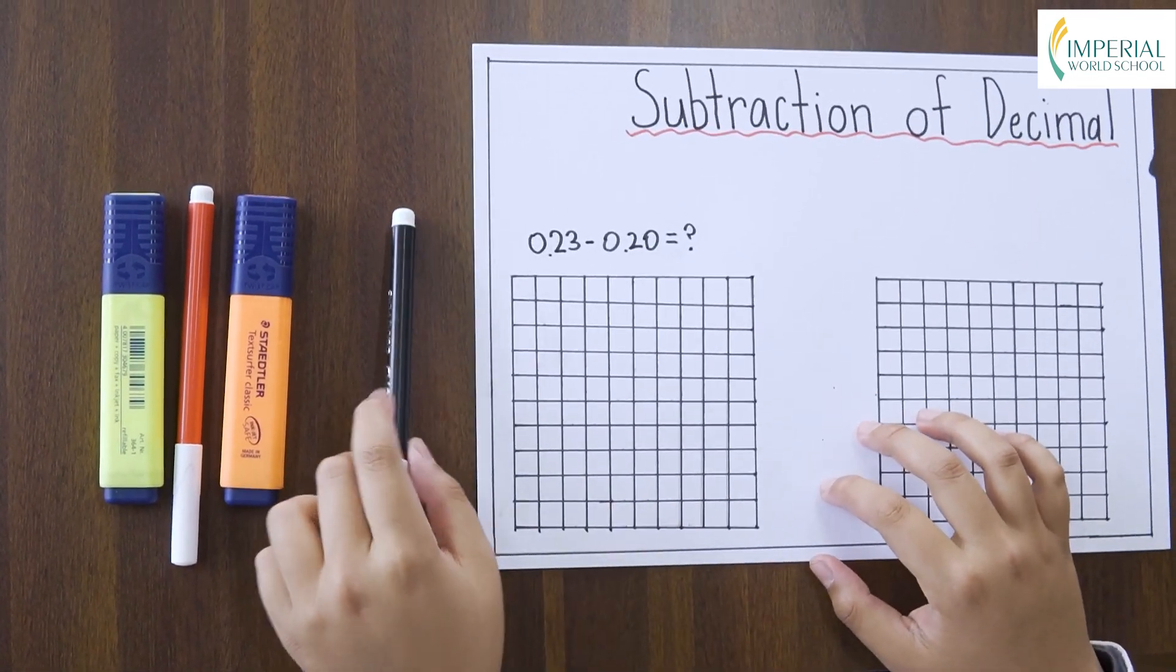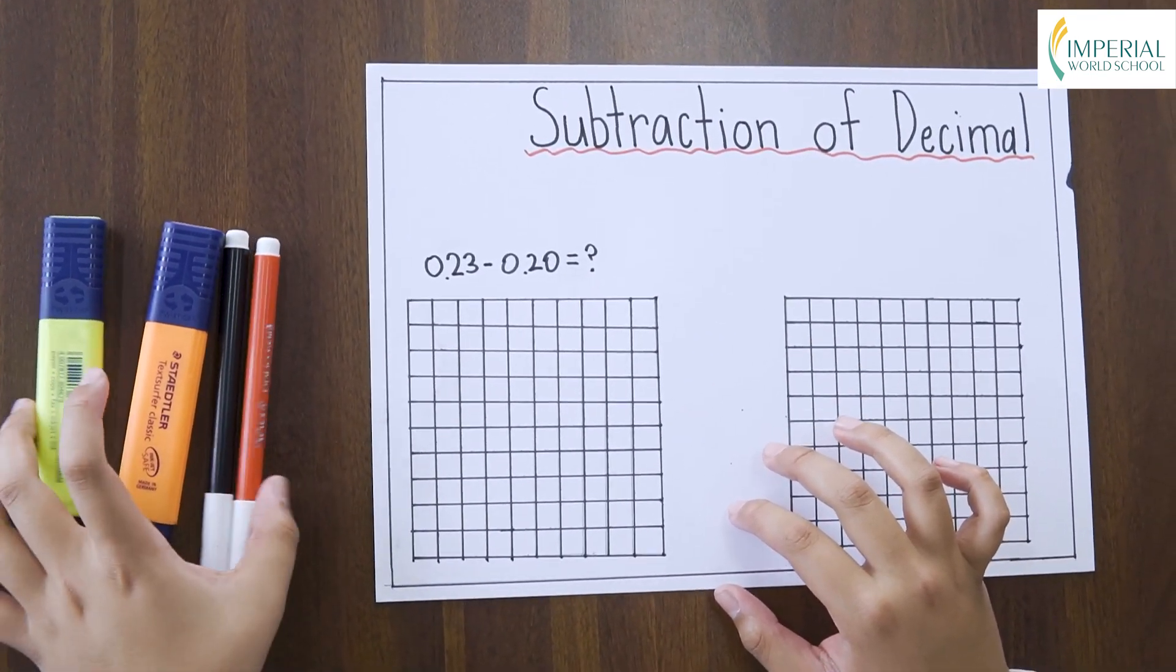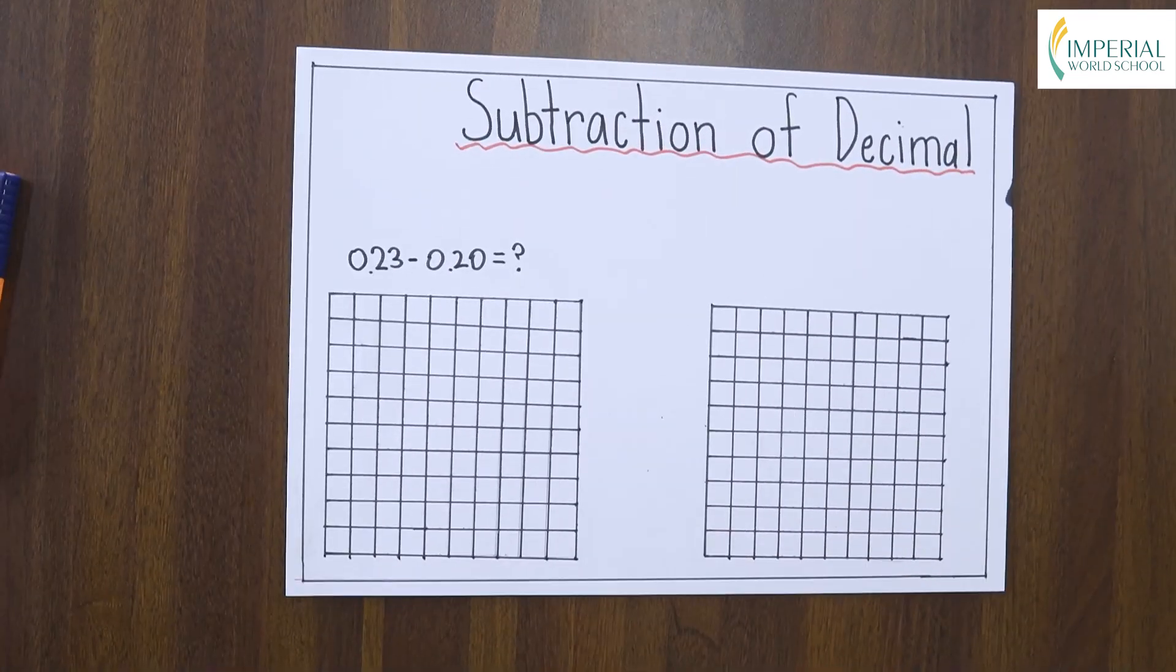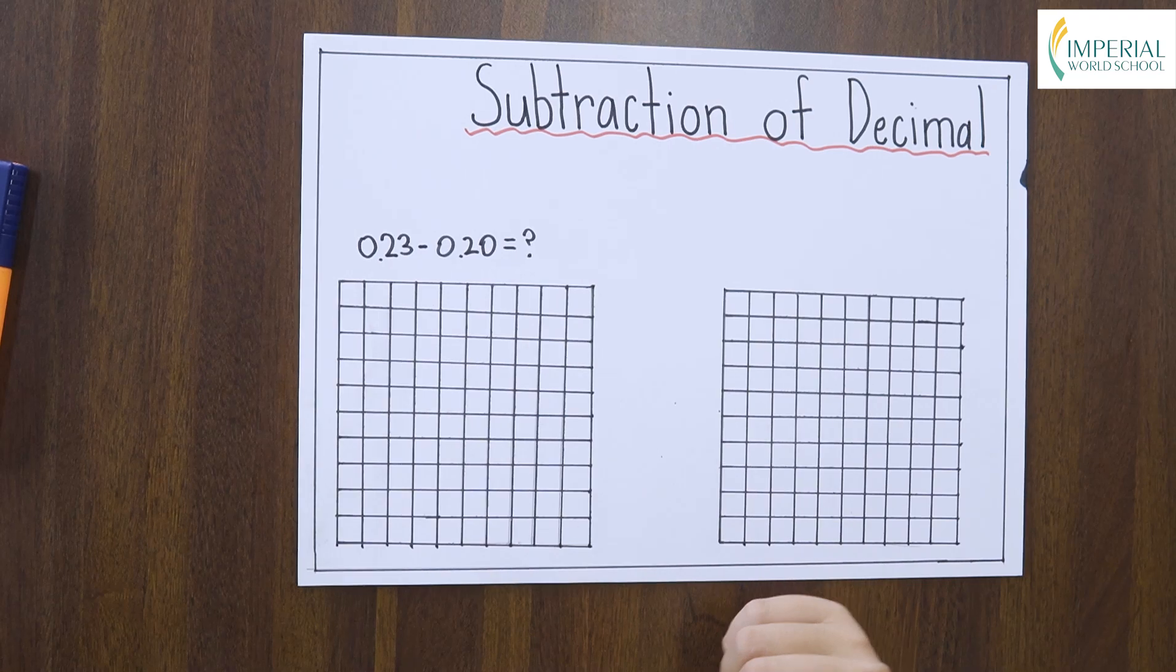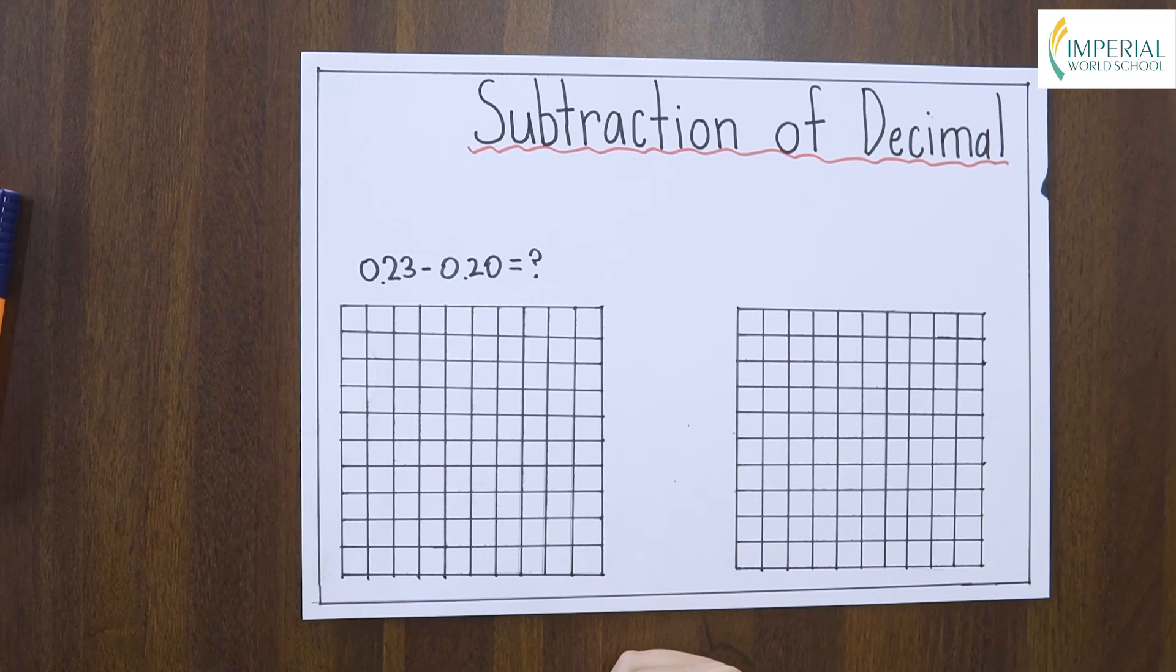But how do we do it? To find the difference we will be using the method on the square paper. I will be showing you the method on the square grid paper. Now we will have to find the difference, but to do it we will have to colour on the square grid paper.